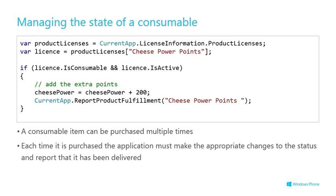You need to protect your consumables. This license information API provides information about purchases, not the state of consumables — that is your job. For example, if a user purchases a bag of 100 gold pieces in your application, it's your responsibility to track the usage of those pieces such that the user always sees the correct state of that product — the number of gold pieces remaining. You need to make sure you pay special attention to that, as it's a great cause of user dissatisfaction if your app gets this wrong.